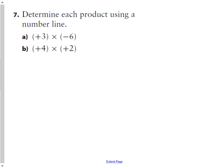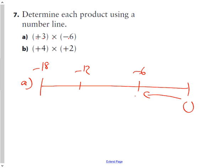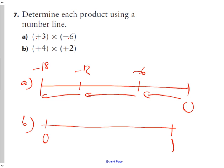Question seven says determine the product using a number line. For A, we know that our product is going to be negative 18. So we're going to start here at zero and adding three groups of negative six. One group of negative six, two groups of negative six, three groups of negative six makes negative 18. And for B, I know my product is going to be eight, so I'm just going to make my number line from zero to eight. It says adding four groups of positive two. One group of positive two, two groups of positive two, three groups of positive two, four groups of positive two. It's represented on the number line like such.